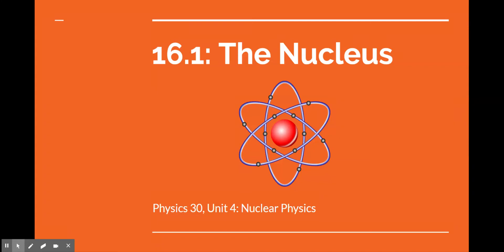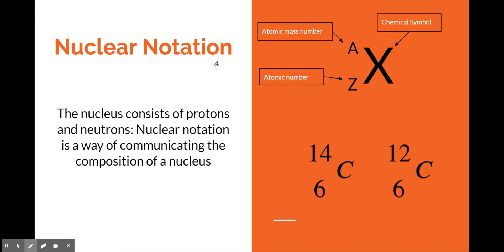So much of our study of the atom has focused on what's happening with the electrons. Now we're going to focus our attention on the nucleus. Because we're going to focus on the nucleus so much, we're going to come to an understanding of something called nuclear notation, which is really a way of communicating what the constituent parts are — what's inside the nucleus. The nucleus consists of two major particles: protons and neutrons. And nuclear notation will help us know the number of those.